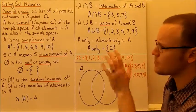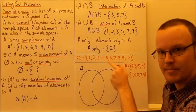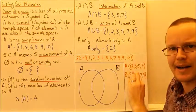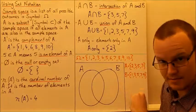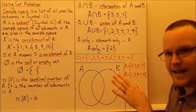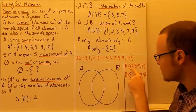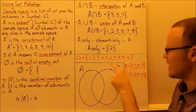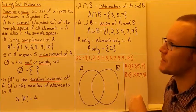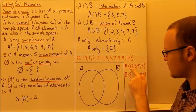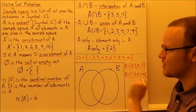They're all there in the sample space. A is a subset only if the values in A are also in the sample space. If there's a number like 21 in A, then it's not a subset of this particular sample space. Here, the values of A are the prime numbers from 1 to 10 inclusive: 2, 3, 5, and 7. So A is a subset of the sample space because all of the elements — each individual number is an element of our subset A.